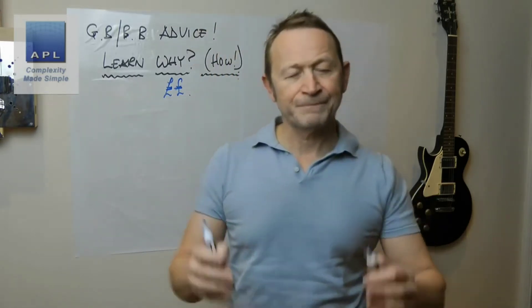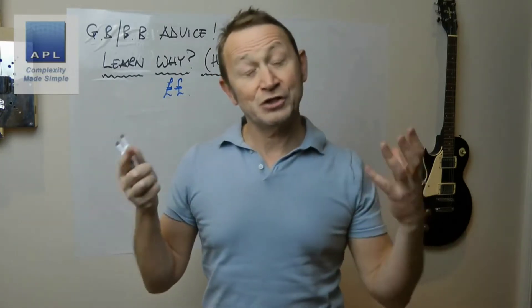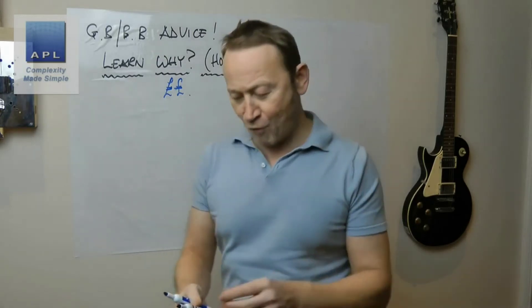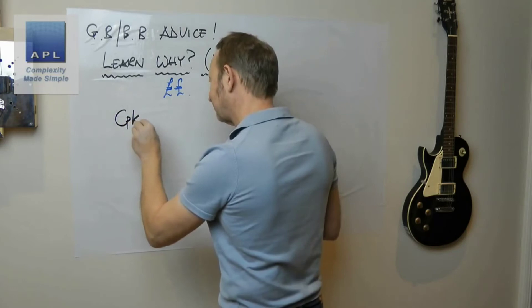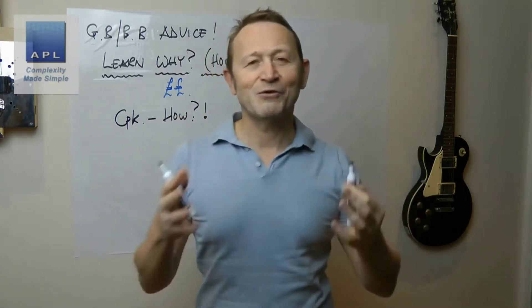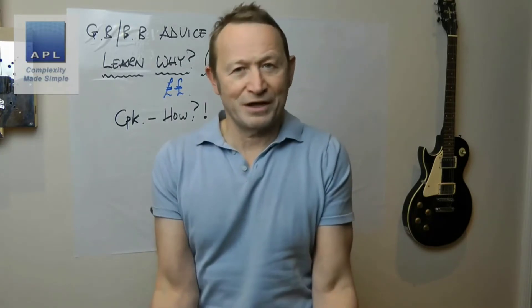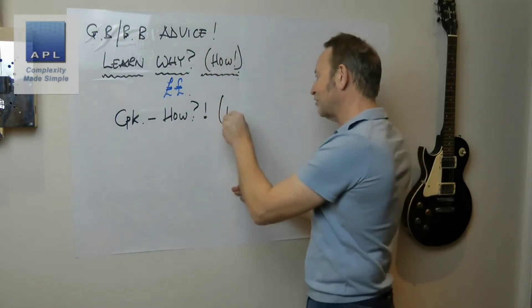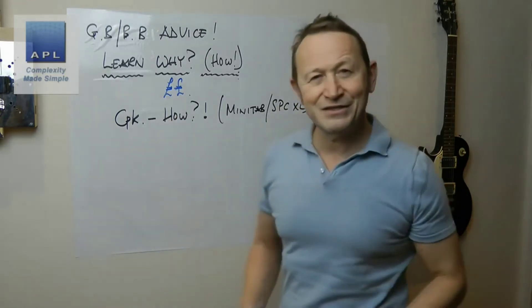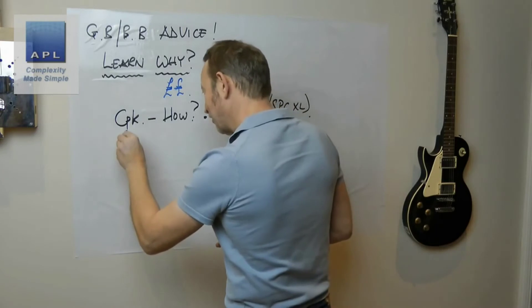So: learn the why. One of the problems, especially when you're going to be certified as a Black Belt or Green Belt, is that most exam questions out there want you to know how. For example, take a tool like CPK — they're going to want you to know how to calculate CPK or CP. It's nice to know that, but think about it: I'm going to let Minitab or SPC Excel do this. Do I need to know how? Not really. Let's talk about why I do CPK.